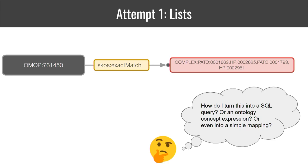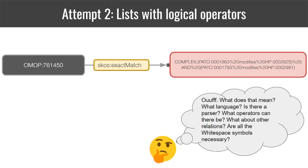But that leads to the question: what do we do with a statement like this? It's just a string where all the components of this complex mapping are listed. We can't translate this into an OWL expression, nor can we turn it into an SQL statement for grouping data, nor do anything else with it. So this is not covering what we really want.